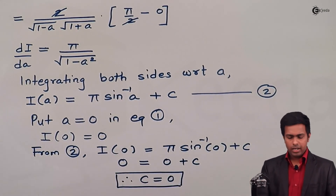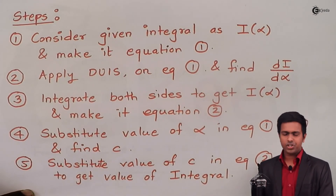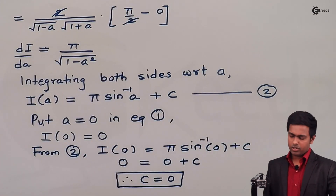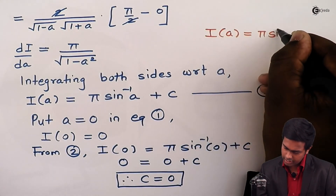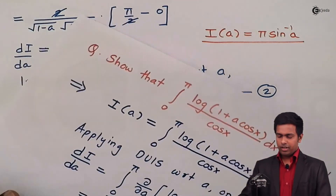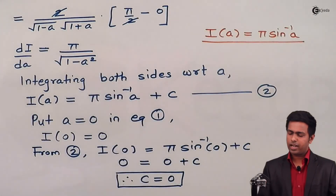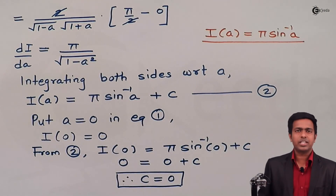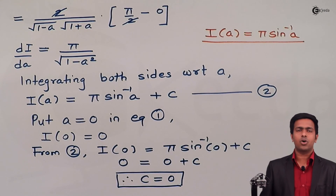In the last step, we substitute the value of c back into equation two to get the final value of the integration. Putting c = 0 in equation two gives I(a) = π·sin⁻¹(a). Looking at the original question, we had to prove that the integral equals π·sin⁻¹(a), and here we have proved exactly that using the rule of DUIS.